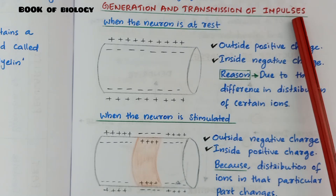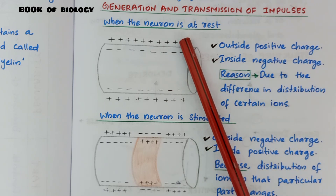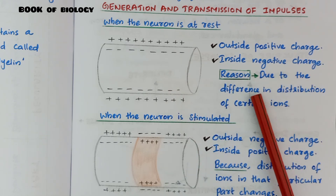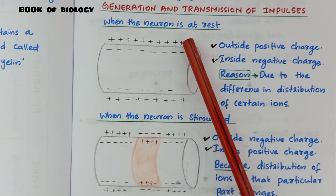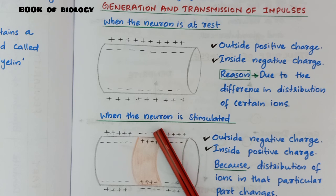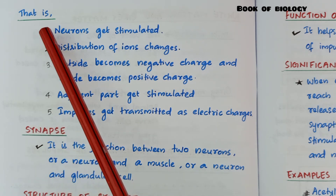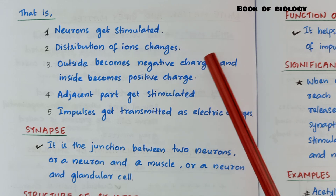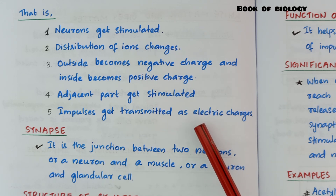Next very important topic: generation and transmission of impulses. When the neuron is at rest, outside is positive charge and inside is negative charge, due to the difference in distribution of certain ions. When the neuron is stimulated, outside becomes negative charge and inside becomes positive charge, because the distribution of ions in that particular part changes. Step-wise: neuron gets stimulated → distribution of ions changes → outside becomes negative, inside becomes positive → adjacent part gets stimulated → impulses get transmitted as electric charges.